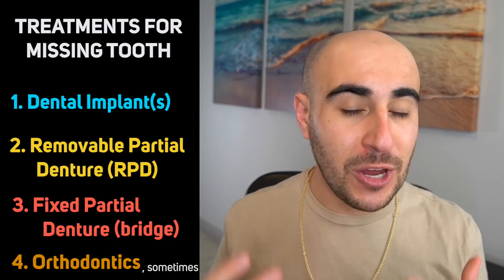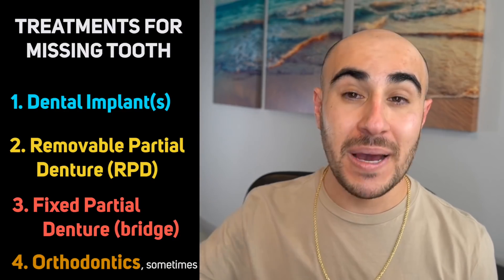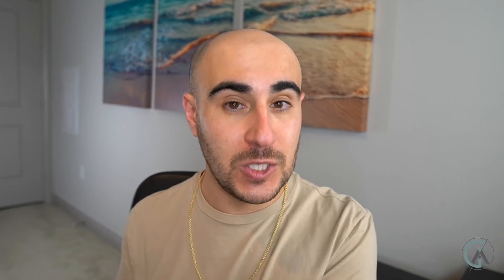The best time orthodontics can be used for missing teeth is if teeth have tipped in towards each other and there's no room to put in an implant. In those cases, orthodontics might actually open up space so that your midlines are aligned and your bite is on. Then you can get something like an implant, a fixed partial, or removable partial denture to replace that spot. Although orthodontics can be used to close space, I generally don't recommend it as one of the best ways of closing the space caused by a missing tooth.